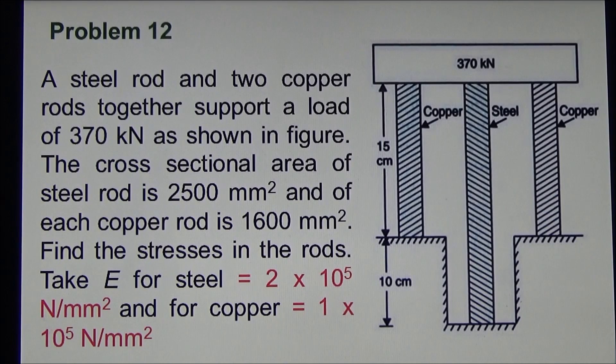Now let us solve this problem. A steel rod and two copper rods together support a load of 370 kN as shown in figure. The cross sectional area of steel rod is 2500 mm square and of each copper rod is 1600 mm square. Find the stresses in the rods. Take E for steel, the Young's modulus 2 into 10 to the power 5 N per mm square and for copper it is 1 into 10 to the power 5 N per mm square.